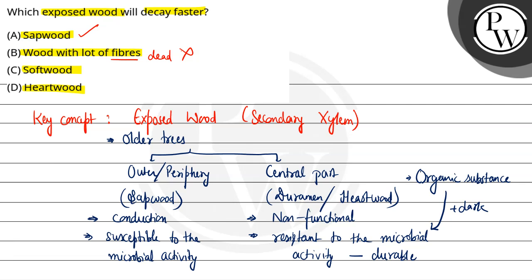Third one is softwood. Softwood is also called non-porous wood and is present in gymnosperms. It is used for construction purposes, meaning it is resistant to insect attack. So this option is also incorrect.